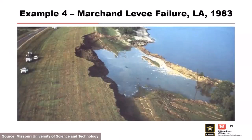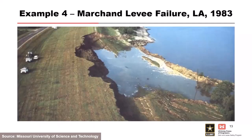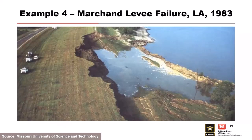Here's a levee failure—the Marchand levee along the Mississippi River in Louisiana. It failed after a flood in 1983. The levee was about 12 feet high on the riverside and had about 8 feet of water above the riverside toe when the slide started. The river was above the riverside toe from January to May 1983, and then from late May to late August, the river stage fell 28 feet—the most rapid fall from flood elevation in the recorded history of that levee.